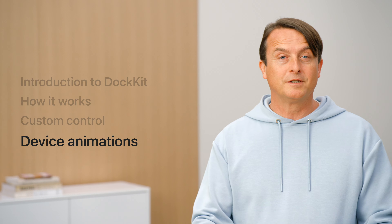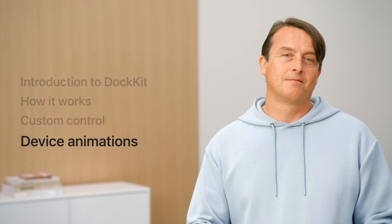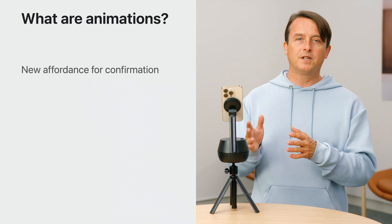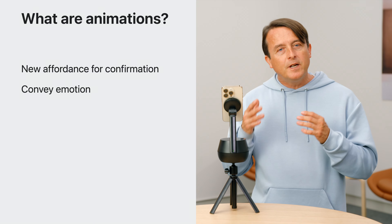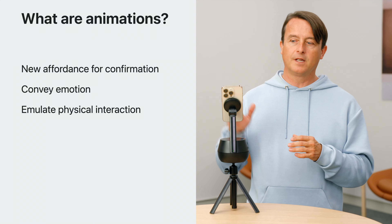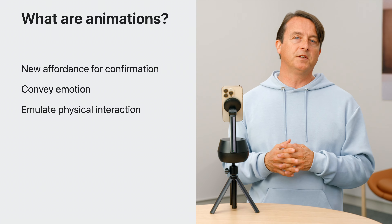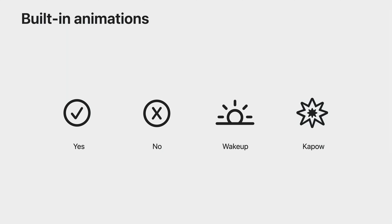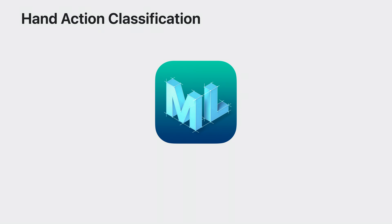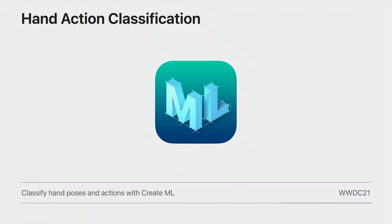With the ability to control the motors directly through the Docket APIs, you can bring the device to life through animations. The motion of the dock can be used as an affordance for confirmation or as a way to convey emotion. You can create your own custom animations through direct motor control to emulate physical interaction with the phone, like a push or a pull. Or you can leverage one of the built-in animations. The built-in animations are: yes, no, wake up, and kapow. You can see the wake up animation in action every time the device startup occurs. Going back to the custom hand tracking app I just demonstrated, you could trigger a built-in animation anytime a specific hand gesture occurs. To do this, you first need to train a custom hand action classification model, which is easily done using the Create ML app. For more information on creating one of these models, be sure to watch the Classify Hand Poses and Actions video from 2021.